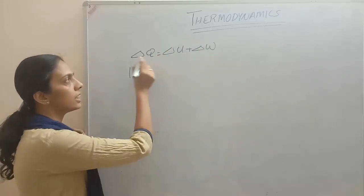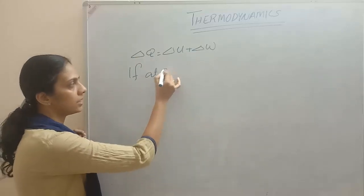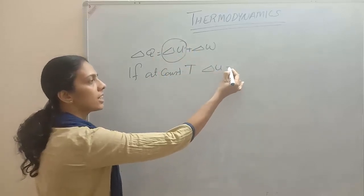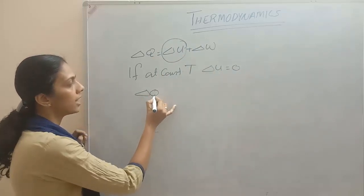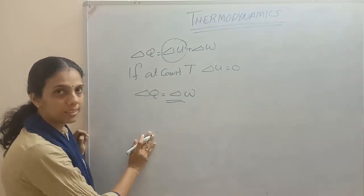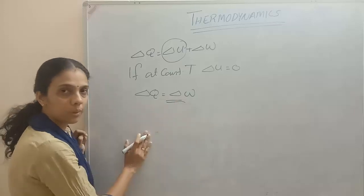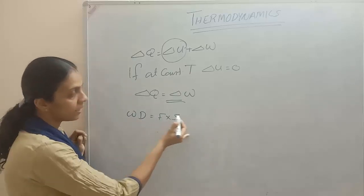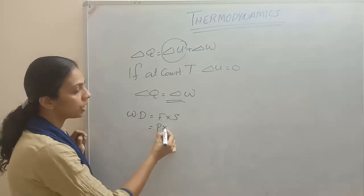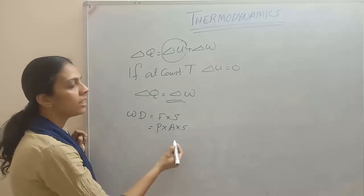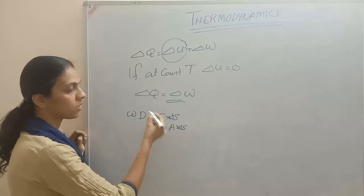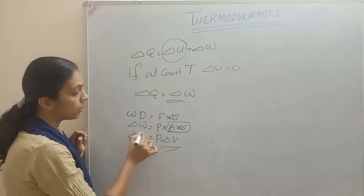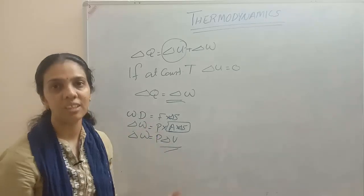If work is happening at constant temperature, the change in internal energy will be equal to zero. Therefore delta Q equals delta W. Work done equals force into displacement, and force equals pressure into area. So for a small displacement, work done becomes P into delta V. For constant pressure, delta W equals P delta V.